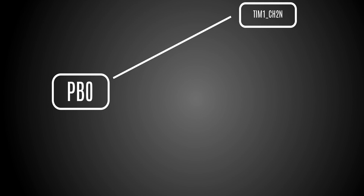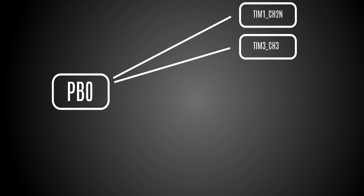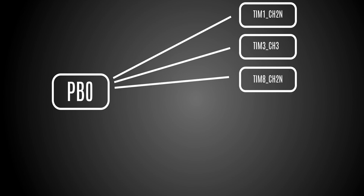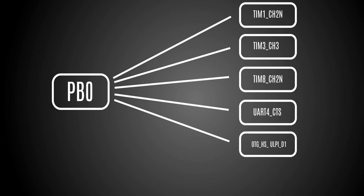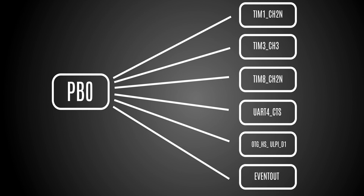Let's take a look at pin PB0. According to the documentation, PB0 can be used as timer 1 channel 2N, timer 3 channel 3, timer 8 channel 2N, OTG HS ULPI D2, serial port 4 CTS line, OTG HS ULPI D1, and event out.